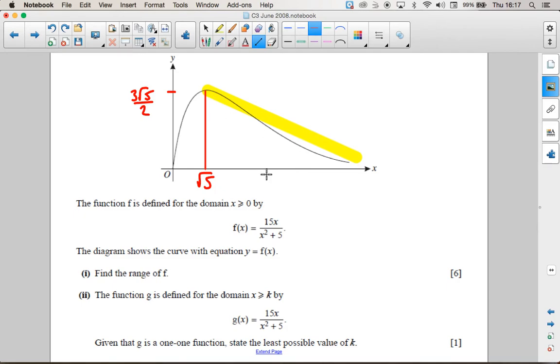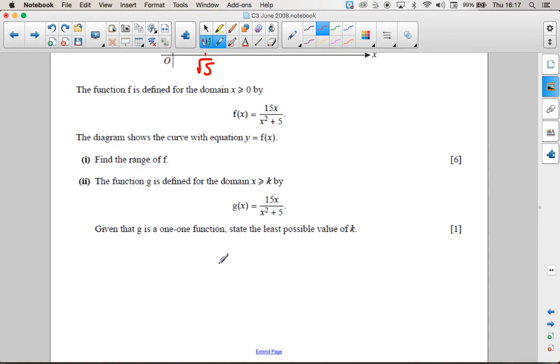So it's a one-to-one function from root 5 onwards. So the answer is when x is more than or equal to root 5. Therefore, the smallest possible value of k is root 5.